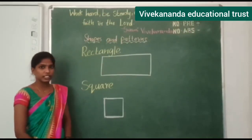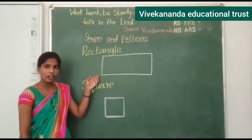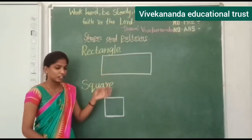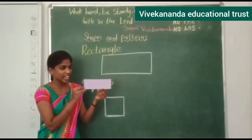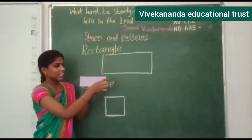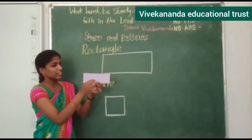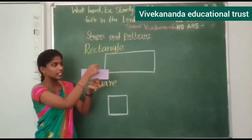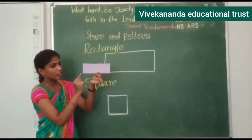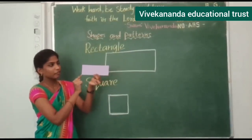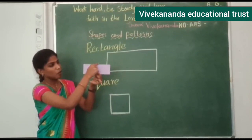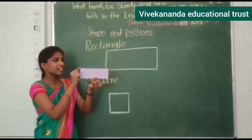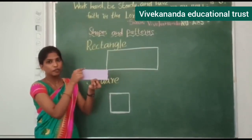Let's learn shapes. What shape is this? Rectangle. So this is a rectangle. It has four corners and four sides. See this — this is the corner: one, two, three, four. Four corners and four sides. These are the sides: one, two, three, four.